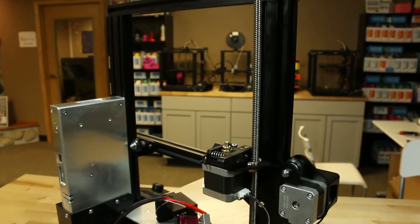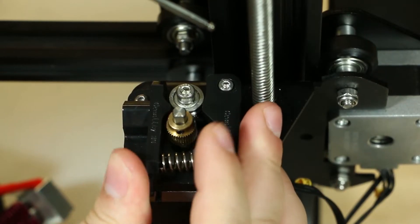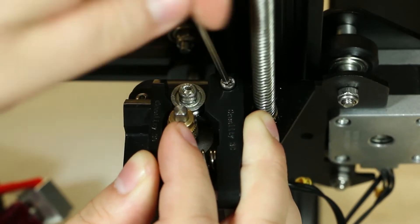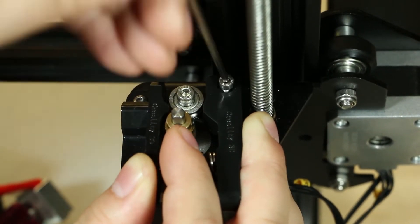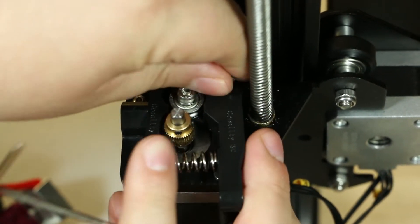The extruder is located on the back of the printer. First, you will remove the screw from the lever using the 2 millimeter allen wrench. Depress the lever so that it is flush with the rest of your extruder. Be careful when you unscrew it so that the spring does not shoot off.